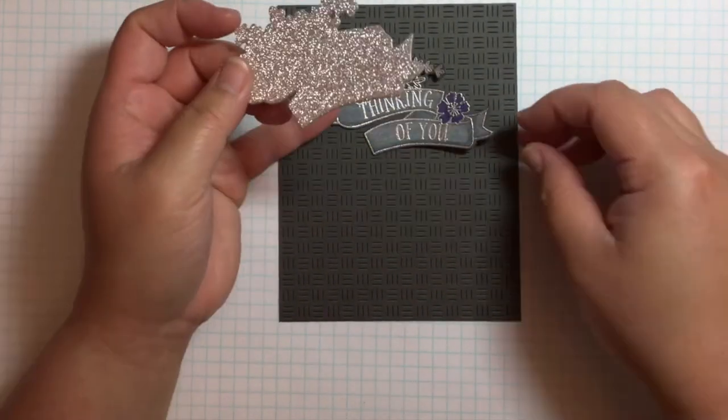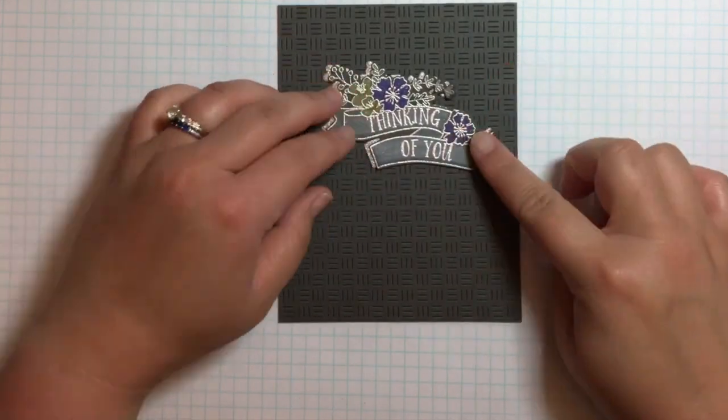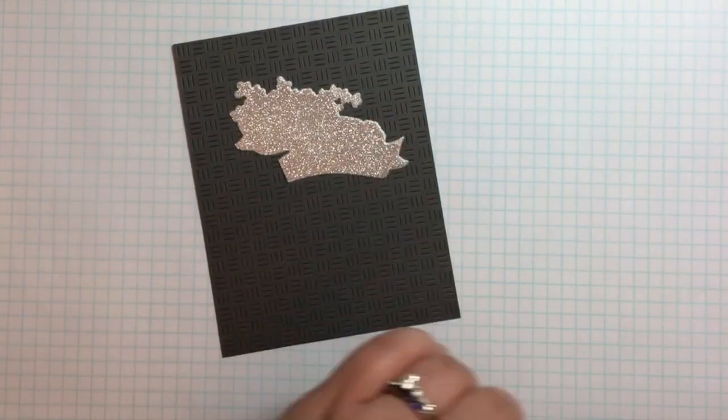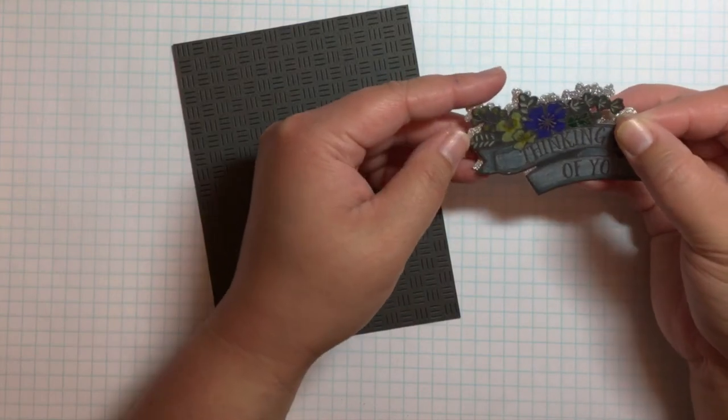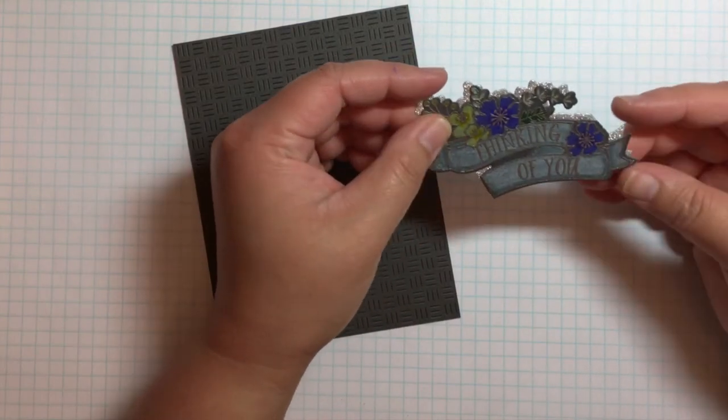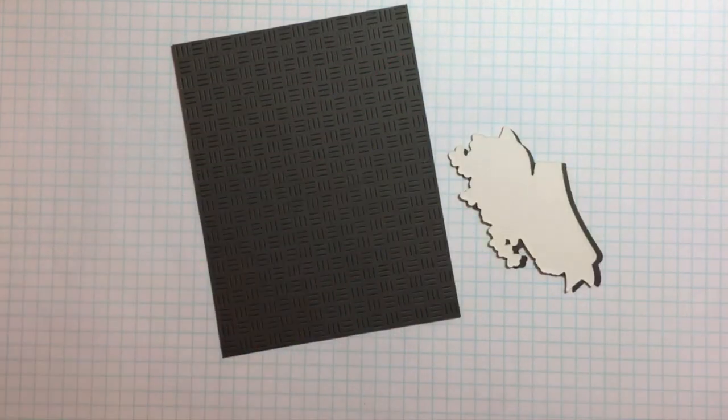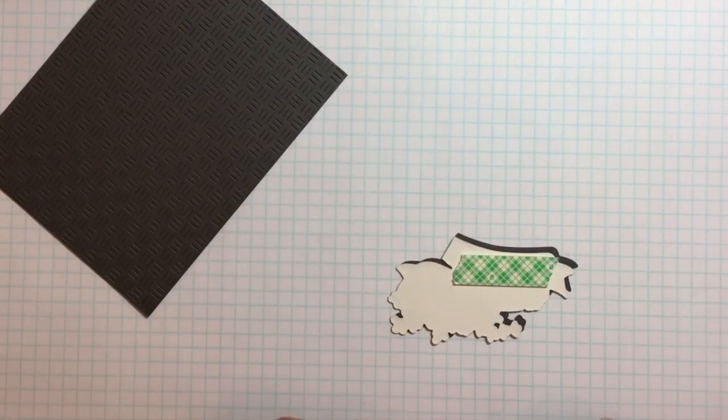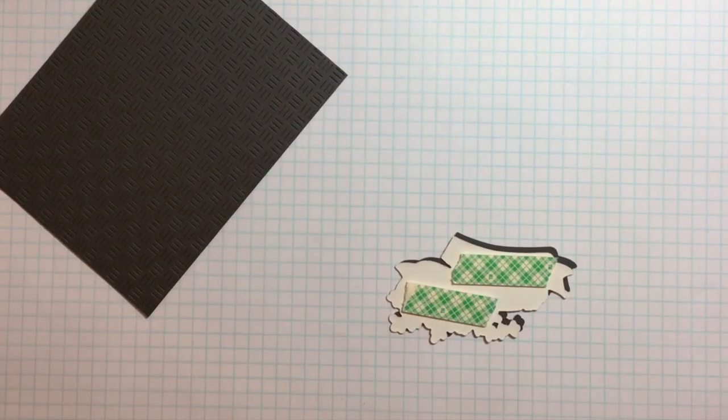At first, I was going to just adhere the floral banner to the basket weave die, but then I decided to add a little more interest and die cut the floral banner from silver glitter cardstock and adhered it as a shadow behind my colored pencil image. Then I popped up the image onto my background with foam mounting tape.